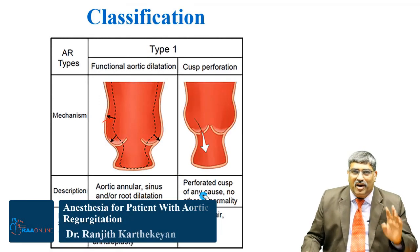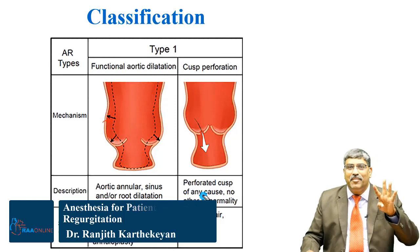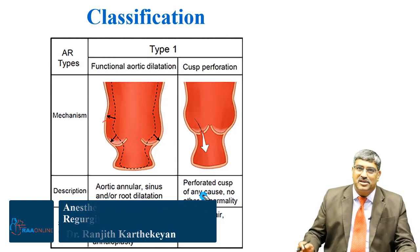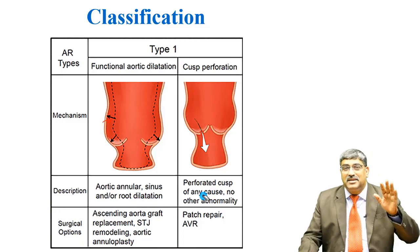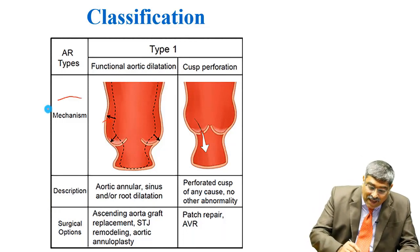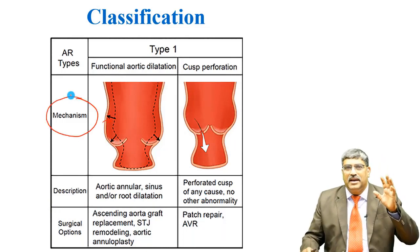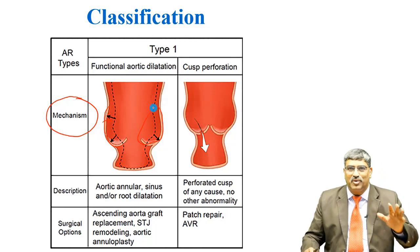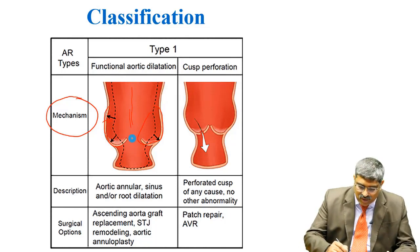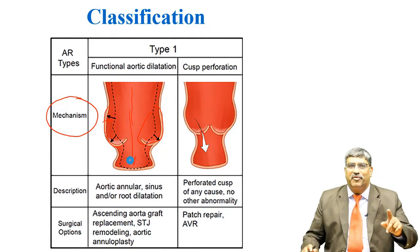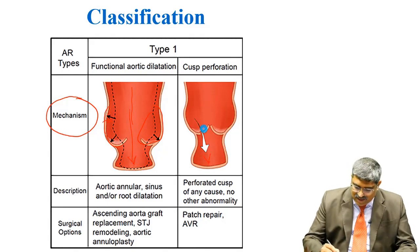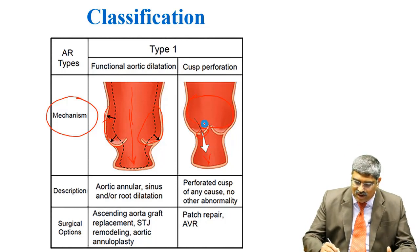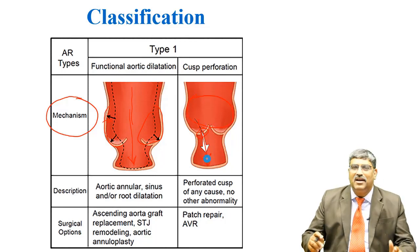Coming to the types of aortic regurgitation, there are three main types and a fourth type as well. These types are based on the mechanism of AR. In Type 1, there is a functional dilatation of the aortic root so that blood from the aorta comes back into the left ventricle, or you can have a cusp perforation so that blood from the aorta comes back into the left ventricle.